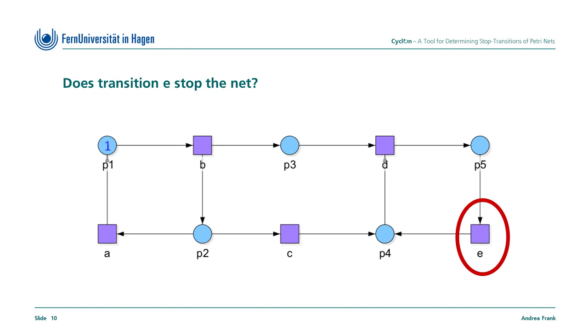Now, we'd like to examine whether transition E is a stop transition. We immediately realize that if E is forbidden, initially the occurrence sequence AB can still occur infinitely and the net doesn't terminate. Therefore, the transition E does not represent a stop transition.